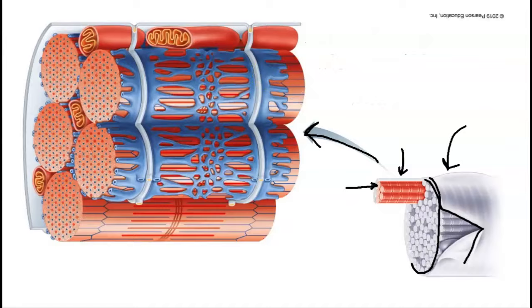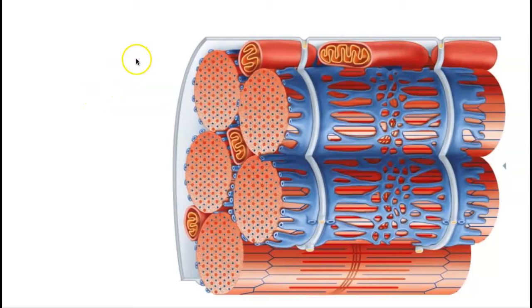Next, let's take a look at another structure that's associated with the sarcoplasmic reticulum. Again, we can see the sarcolemma, the plasma membrane outside of the cell.